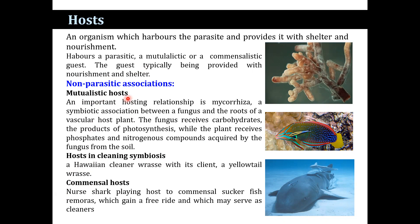In the case of the mutualistic host, an important relationship is mycorrhizae — a symbiotic association between a fungus and the roots of a vascular host plant. The fungus receives carbohydrates, the products of photosynthesis, while the plant receives phosphates and nitrogenous compounds acquired by the fungus from the soil.